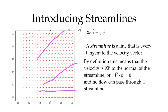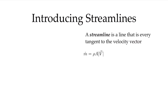If the streamline is, by definition, always tangent to the velocity vector, that means a normal to a streamline, if drawn anywhere, is always perpendicular to the velocity. The dot product of velocity and n is equal to zero, so there can be no flow through a streamline. This acts as if it's a boundary — there is no flow crossing any of these streamlines. That makes it a very useful tool for visualization.